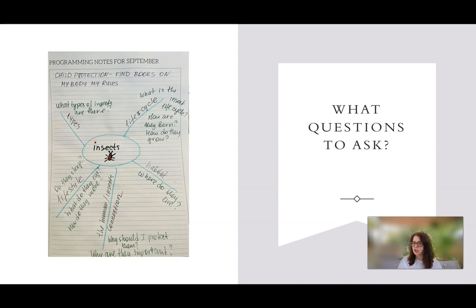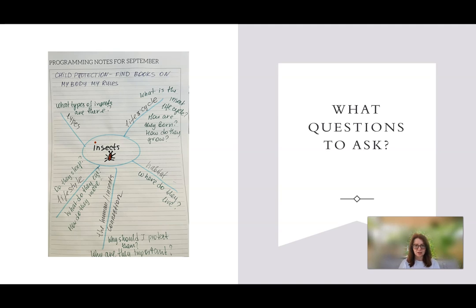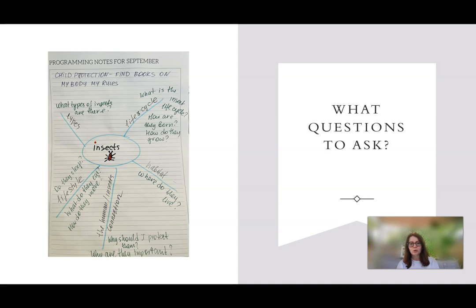You can use a mind map to generate questions to ask children about a topic of interest, like bugs or insects. This is what I start any of my projects with — you can call it webbing. You can add more questions and experiences to this initial mind map. For example, basic questions you might ask children include: What is the life cycle of an insect? How are they born? How do they grow? What do you know about insects?